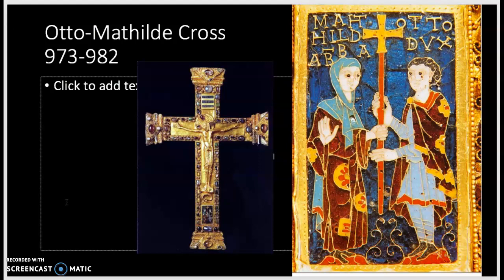What we have here are depictions of the Abbess Matilda, shown here on the left, and her brother Otto on the right. They both wear regal clothing. What's so interesting is that in the middle of this enamel, we see the sibling pair displaying a processional cross — this is the Otto-Matilda cross itself. So we have a representation of the cross on the cross, and it shows us how these processional crosses would be attached to a wooden staff and be used in liturgical rituals.